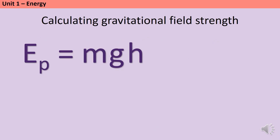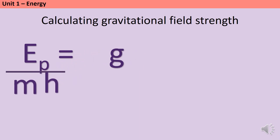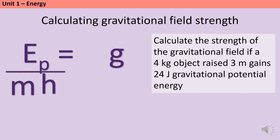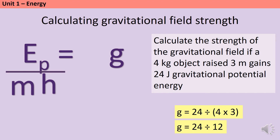We can use the same strategy to make gravitational field strength the subject. Right now g is multiplied by mass and height, so we divide both sides by mass and height, leaving us with: gravitational field strength = potential energy ÷ (mass × height). For example, a four kilogram object raised three meters gains 24 joules of GPE: g = 24 ÷ (4 × 3) = 24 ÷ 12 = 2 newtons per kilogram.